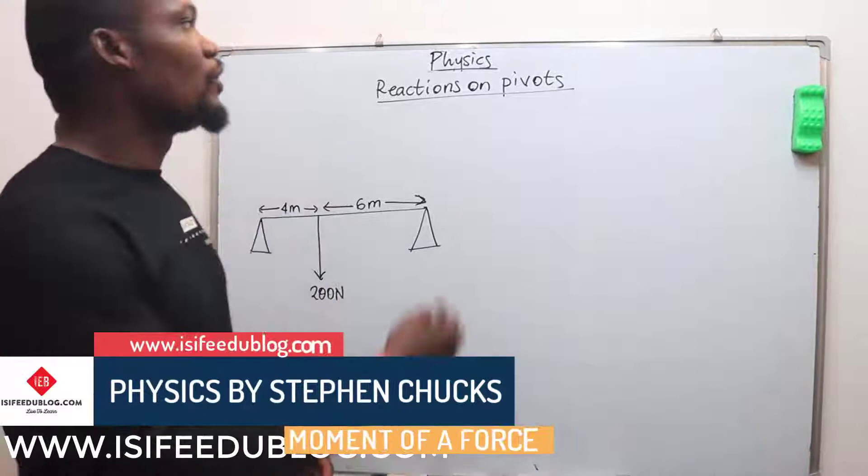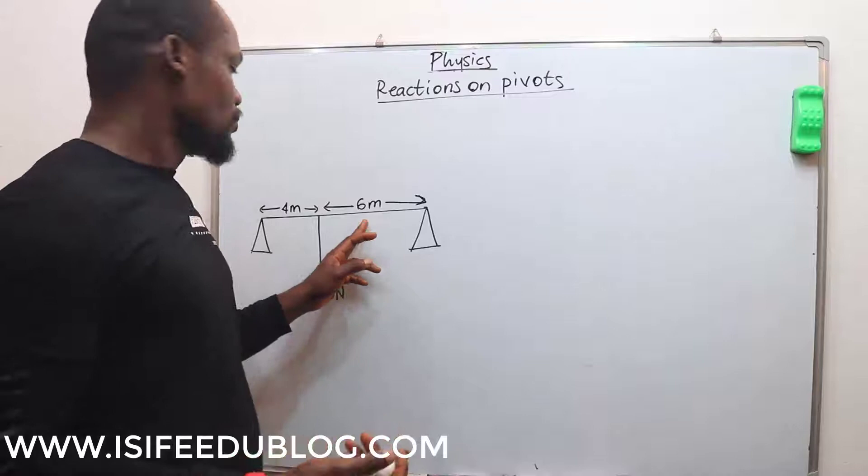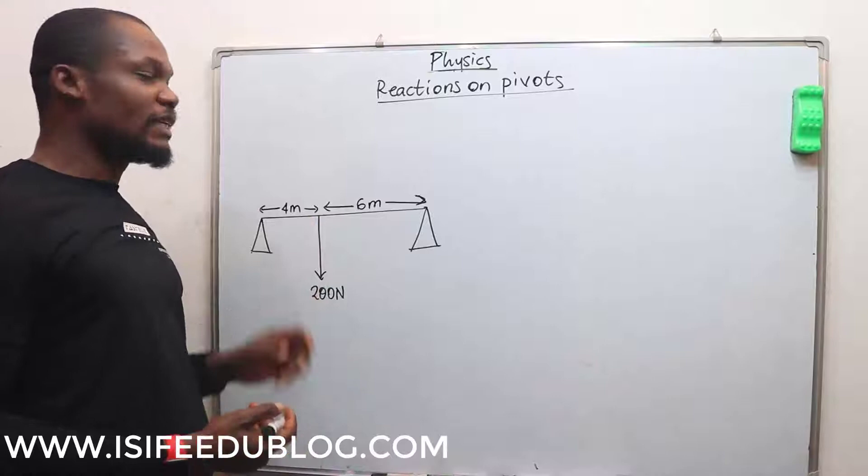Okay, now we are going to talk about reactions on pivots. You can take a quick look at this diagram where we now have a beam or a rod with a force of 200 newtons hanging at a given point.